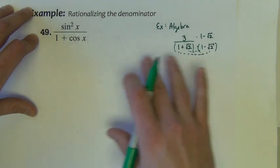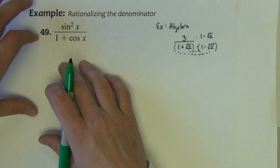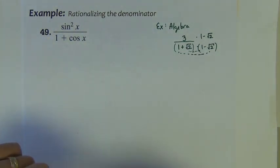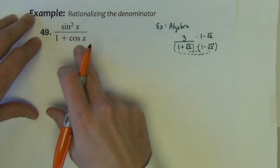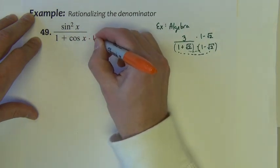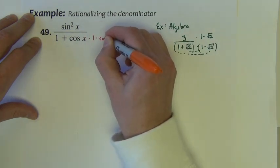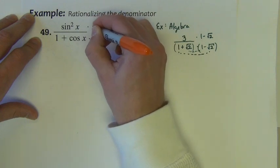Well, the same sort of thing, believe it or not, kind of works here too. If I see this denominator that has two terms in it, this same rationalizing trick will work to simplify this. So I'm going to begin this by multiplying by the conjugate pair, 1 minus cosine x.